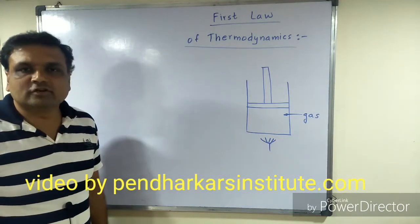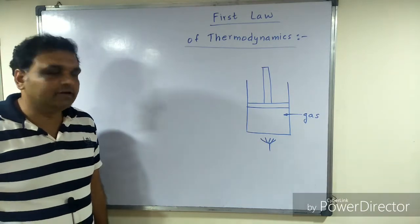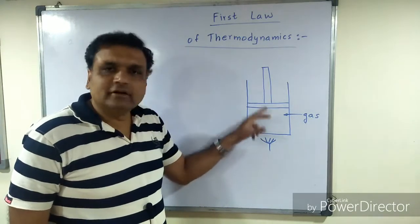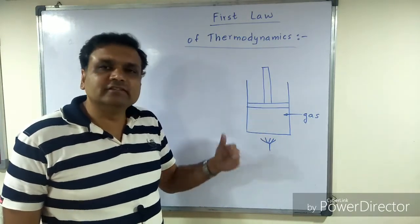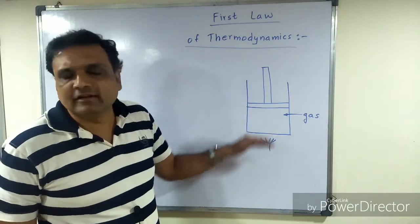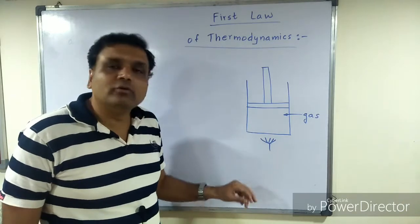Let us try to understand the first law of thermodynamics and write a mathematical expression for heat. Consider a cylinder fitted with a piston. We will assume the piston is frictionless and rigid so there are no losses of energy while the piston moves. Here is some gas enclosed, and from below we are heating the gas.